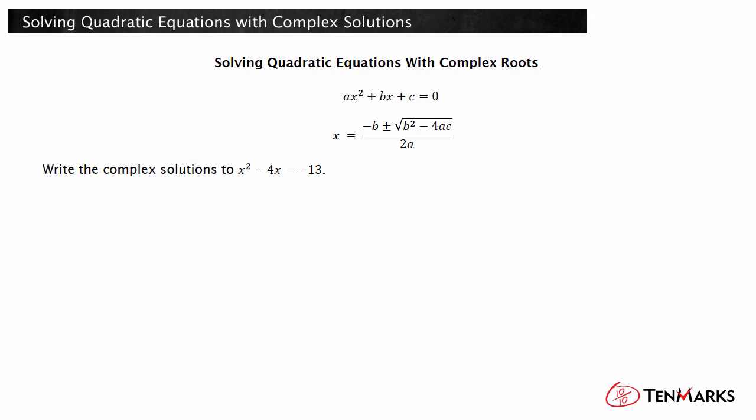Let's look at an example. Write the complex solutions to x squared minus 4x equals negative 13.